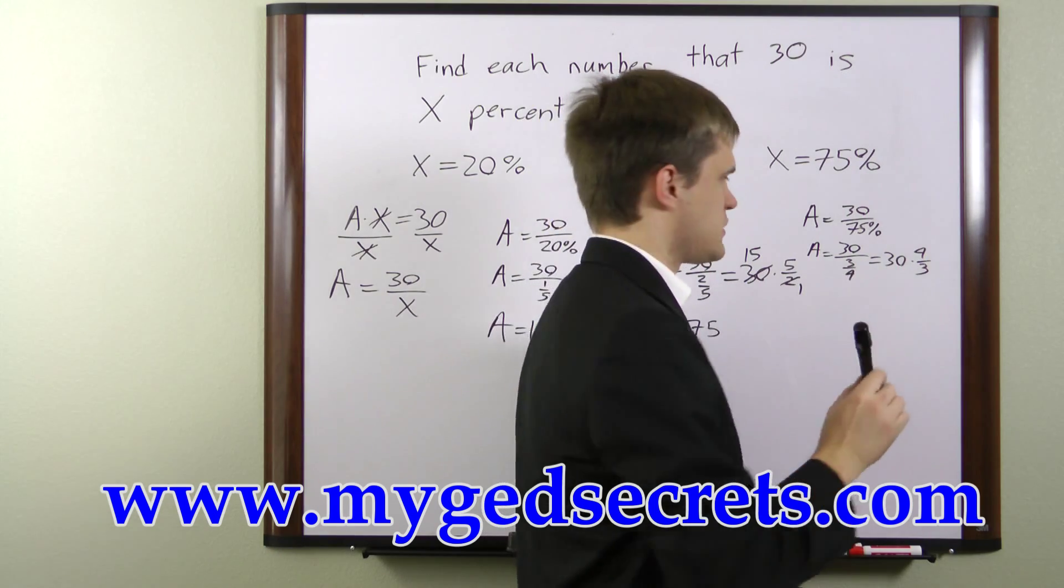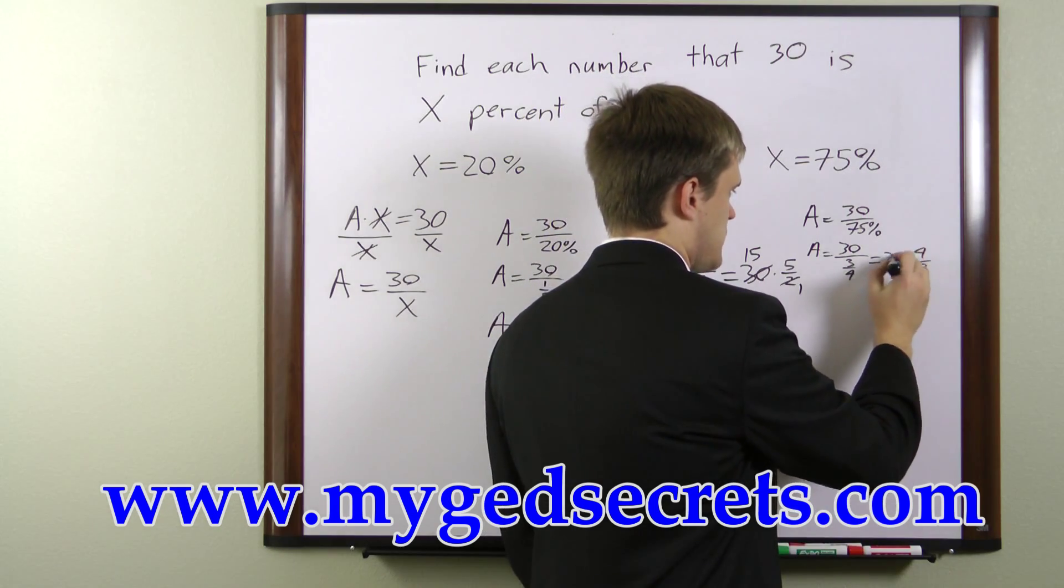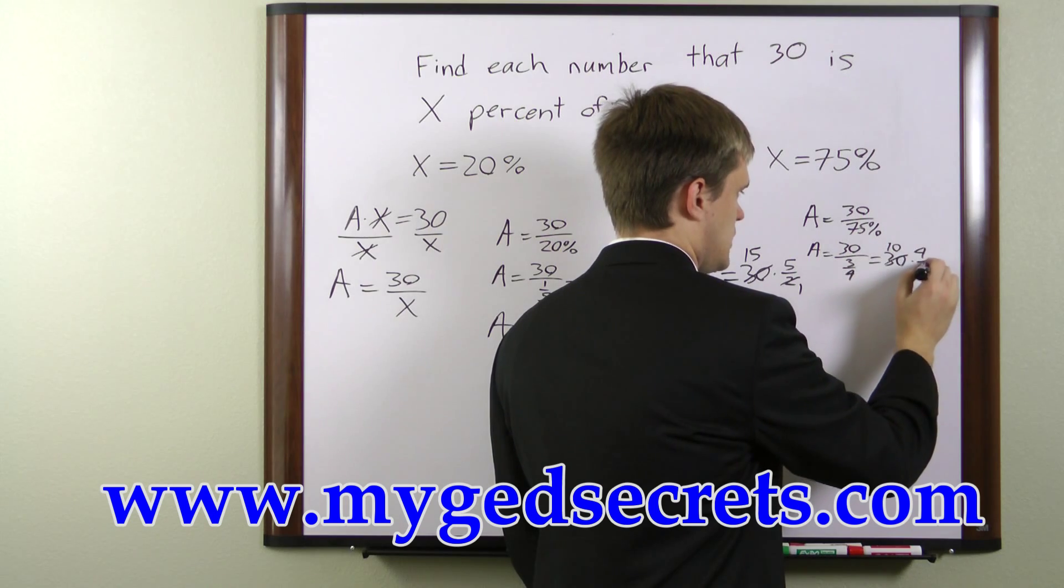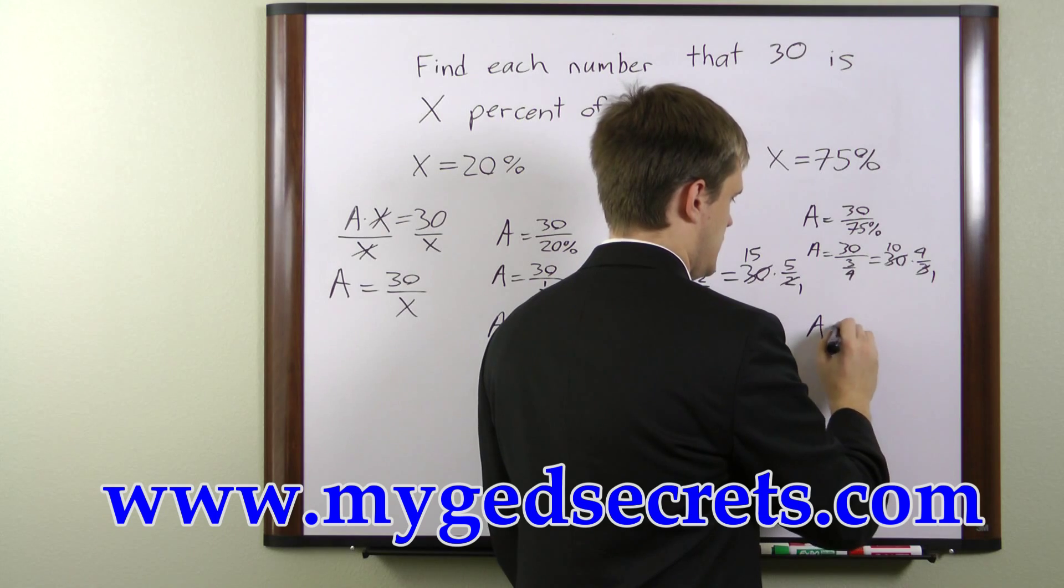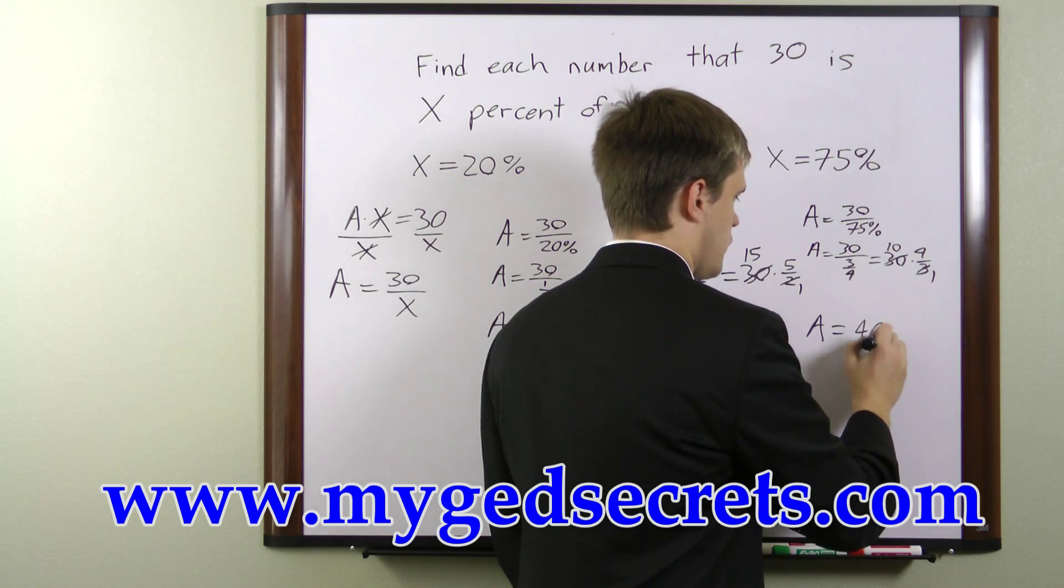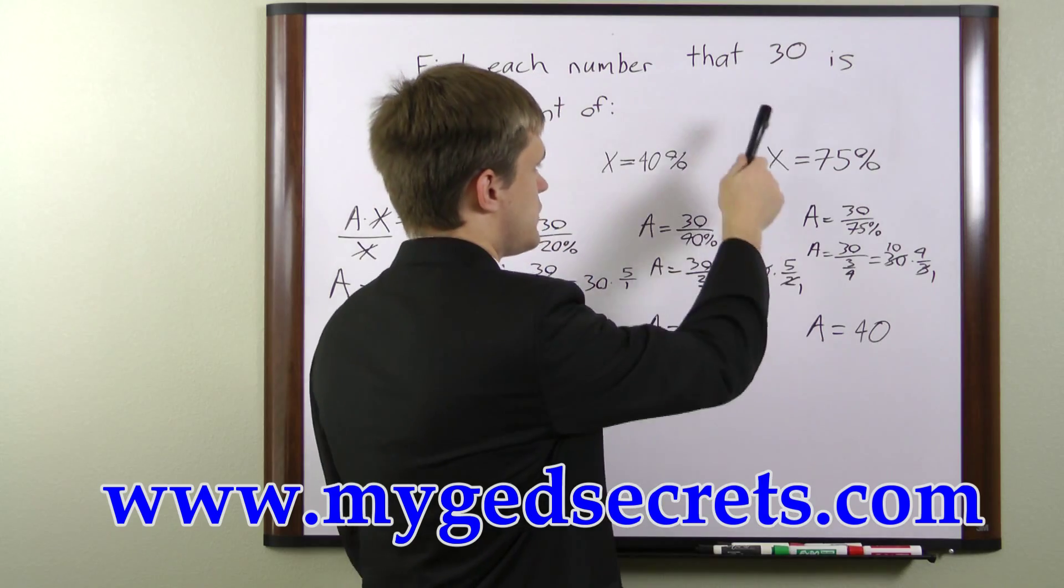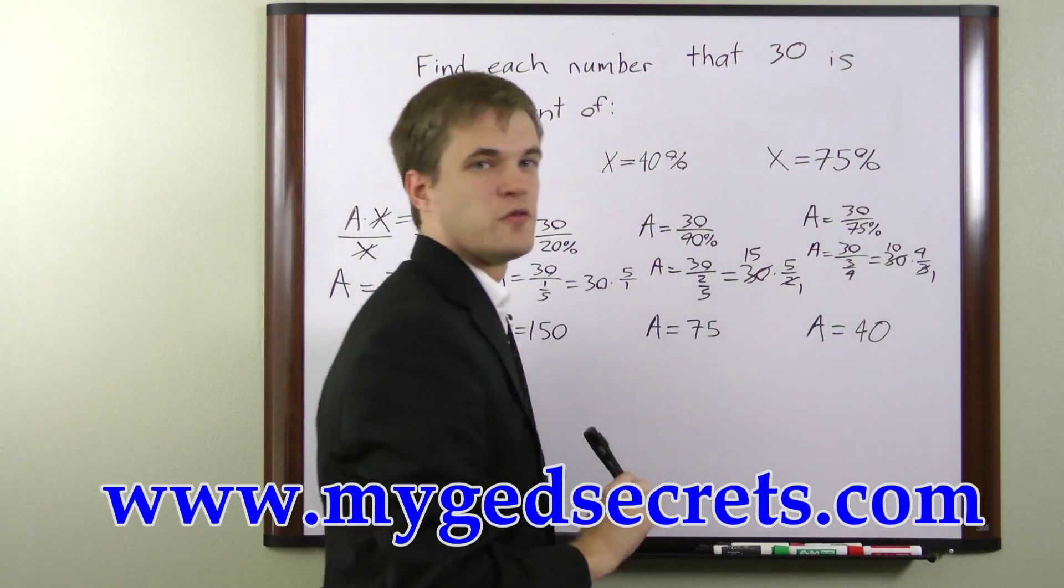Once again, we can cancel by dividing 30 by 3 to get 10, and 3 by 3 to get 1. We're left with 10 times 4, which is 40. So 30 is 75% of 40.